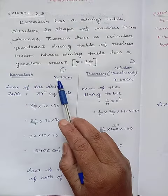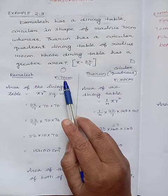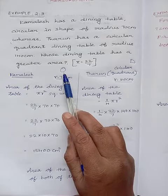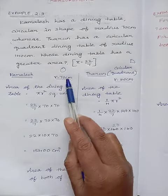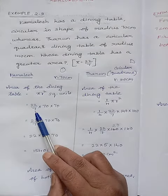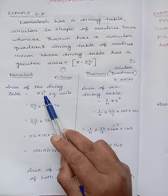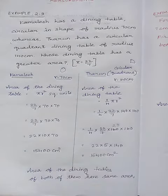So Kamalesh, the dining table radius is 70 cm and the area of the dining table, it is in the shape of circular. We know that area of a circle is πr². Pi value is 22/7, radius value is 70. r² means 70 × 70.